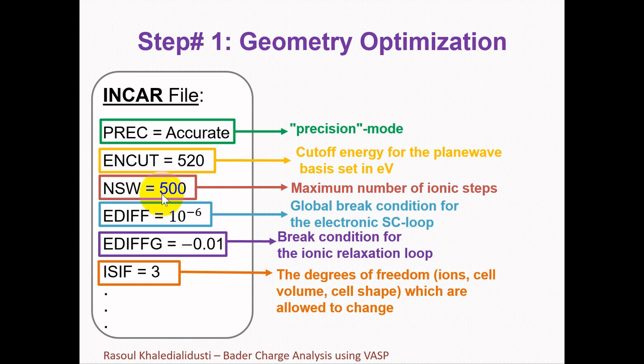NSW sets the maximum number of ionic steps. Here NSW=500 means the maximum number of ionic steps is 500. Within each ionic step, at most the maximum number of electronic self-consistency loops are performed, unless the convergence criterion determined by EDIFF is matched before. The convergence criterion determined by EDIFF is the global break condition for the electronic self-consistent loop. Exact Hellmann-Feynman forces and stresses are calculated for each ionic step.